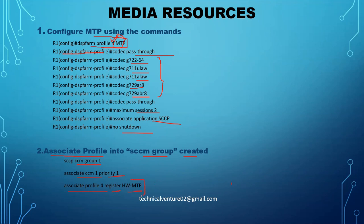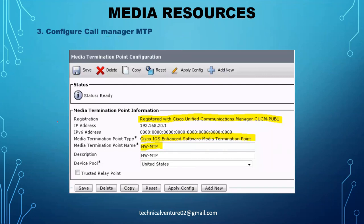Once you register this profile as a hardware MTP, you need to add it in your CUCM. Go to media resources and then to media termination point. When adding the hardware MTP, choose the type — Cisco enhanced iOS enhanced software media termination point. If you are using a transcoder for configuration on CUCM, you will use Cisco IOS enhanced MTP, as CUCM does not give a separate transcoder configuration option in this section.